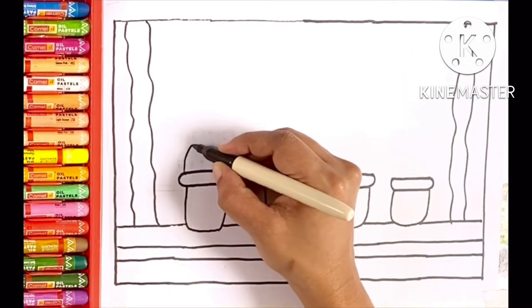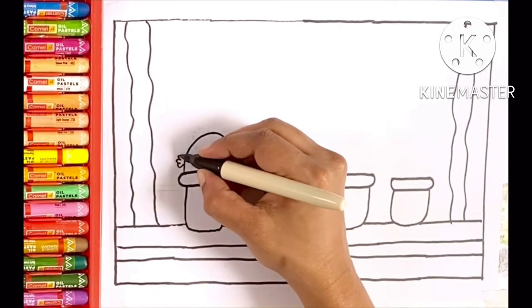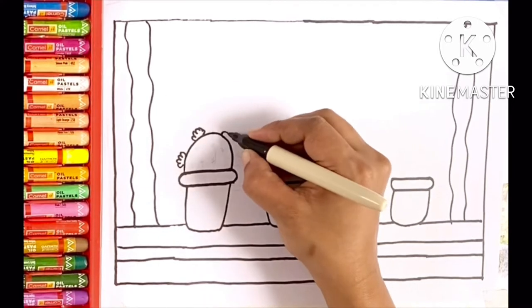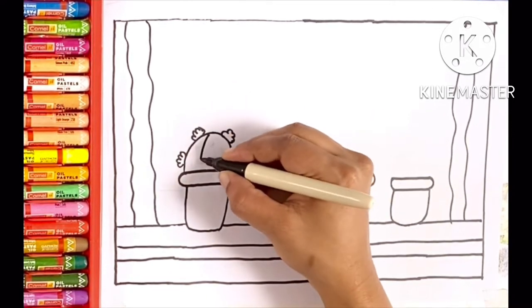Now we are going to draw different cactus plants. In the first pot, draw downside U-curve and on top of it draw some flowers. Does it look like watermelon? Yes.